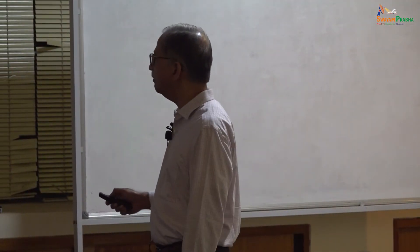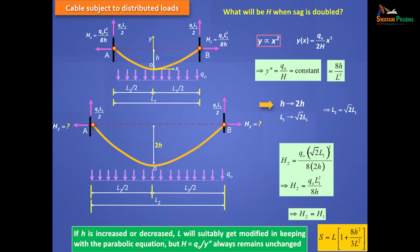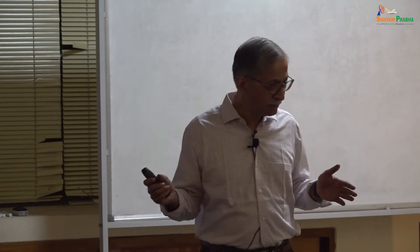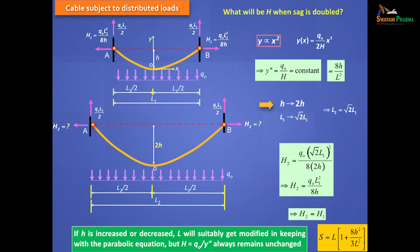If you choose your origin at the lowest point, then Y is upward and the equation will always be a parabola: Y = AX². This satisfies the boundary conditions that at X=0, Y=0, and Y′=0. The constant of proportionality is Q₀ divided by 2H. Taking the second derivative gives Q₀/H, which is a constant equal to 8H/L². This was covered previously.